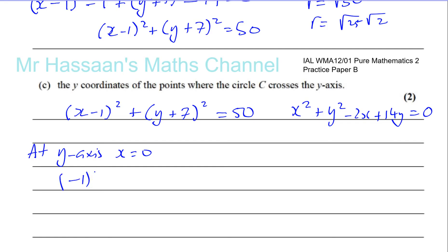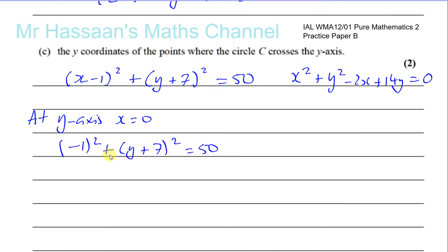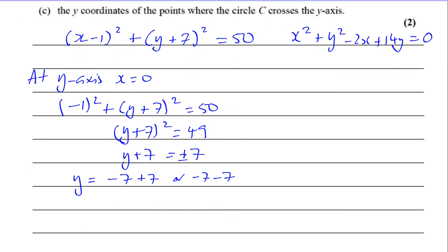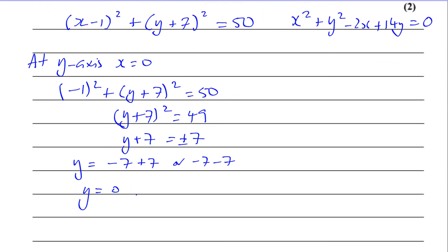Substituting x equals 0 gives (0 minus 1) squared plus (y plus 7) squared equals 50, so 1 plus (y plus 7) squared equals 50. Subtracting 1 from both sides: (y plus 7) squared equals 49. Taking the square root of both sides: y plus 7 equals plus or minus 7, so y equals negative 7 plus 7 or y equals negative 7 minus 7.